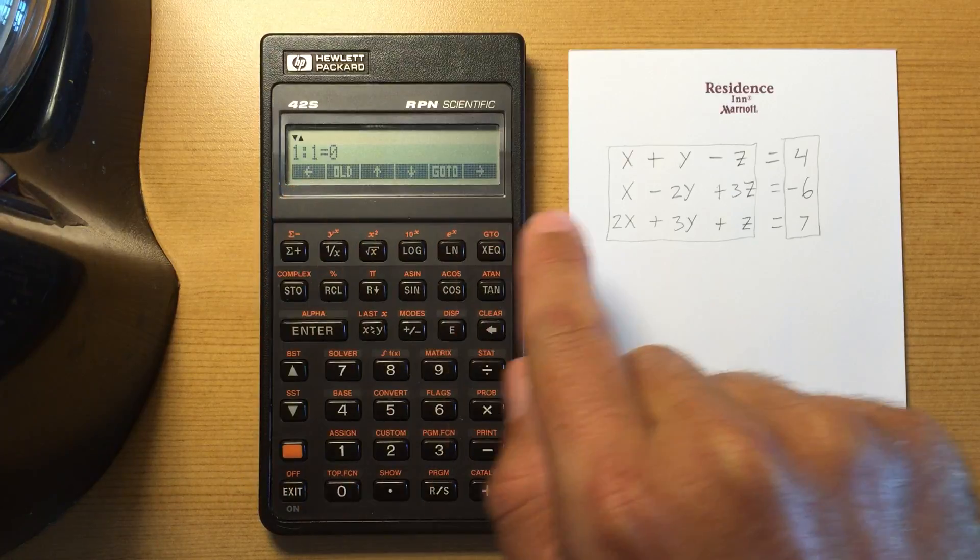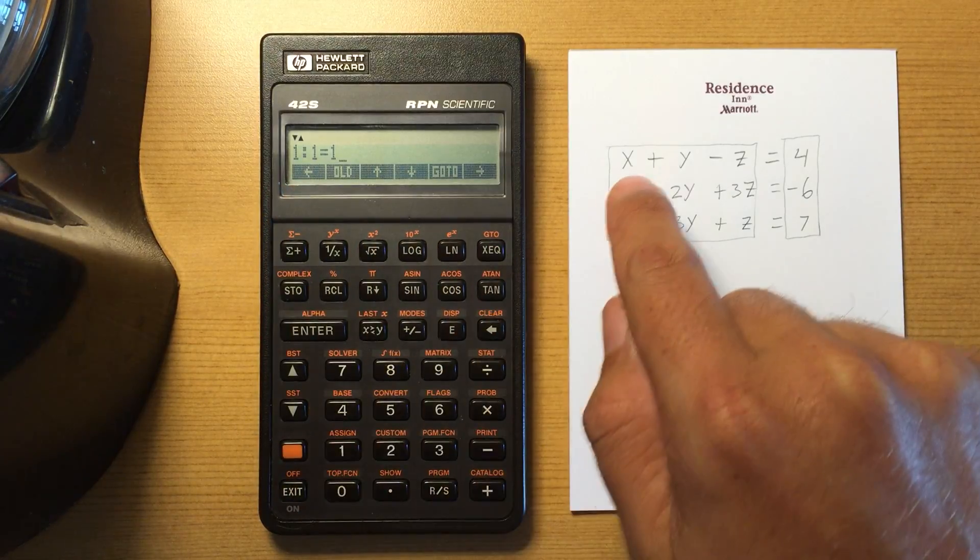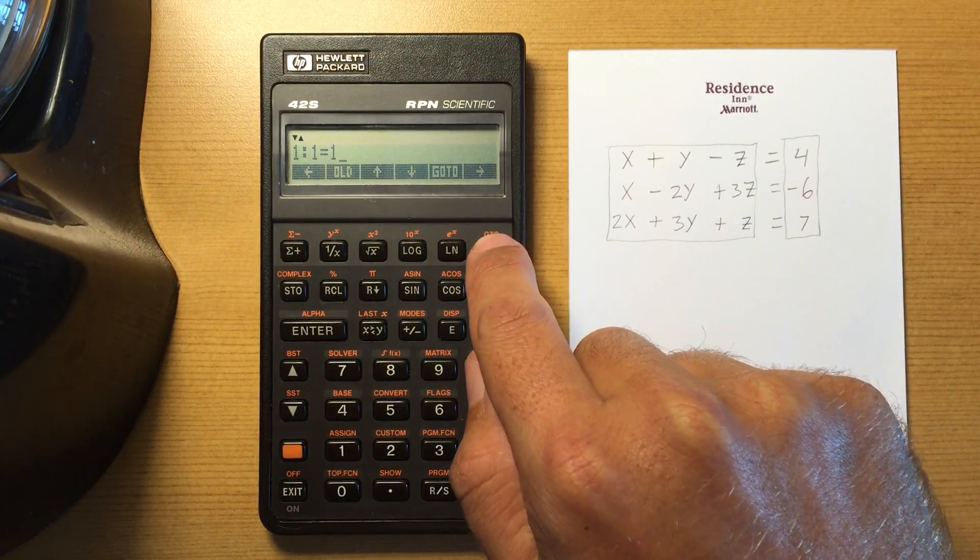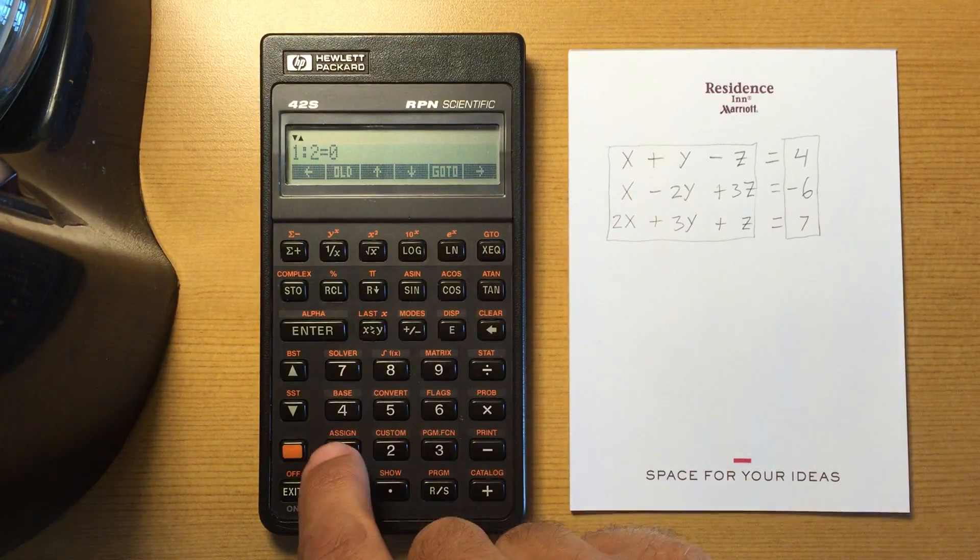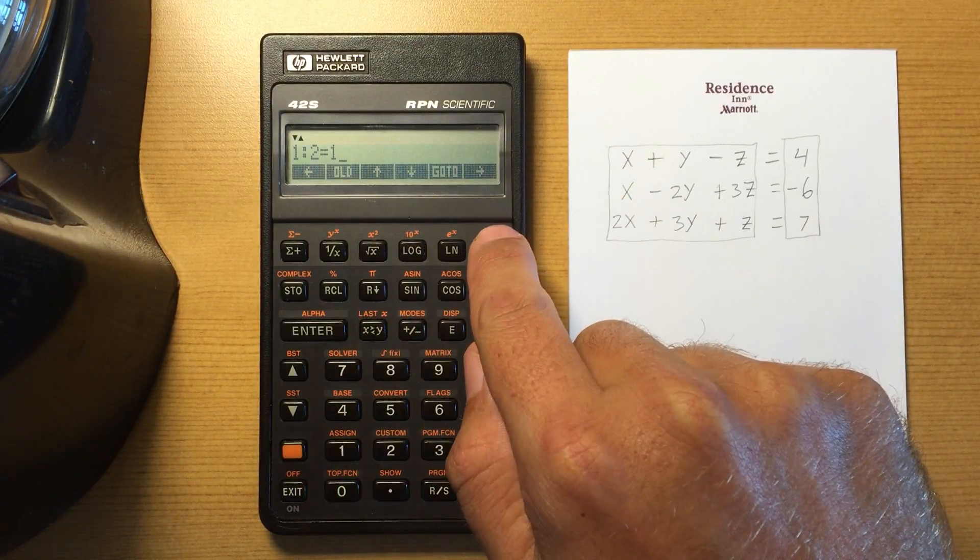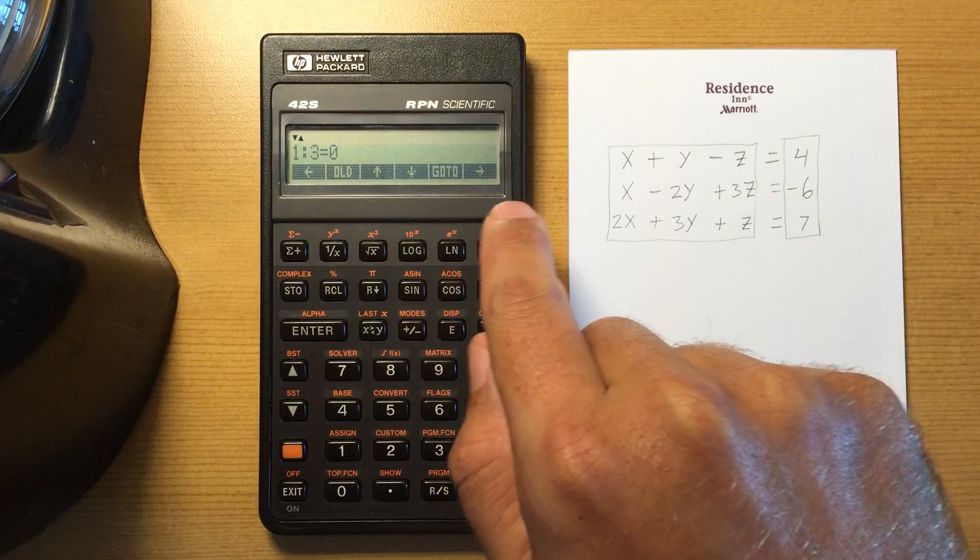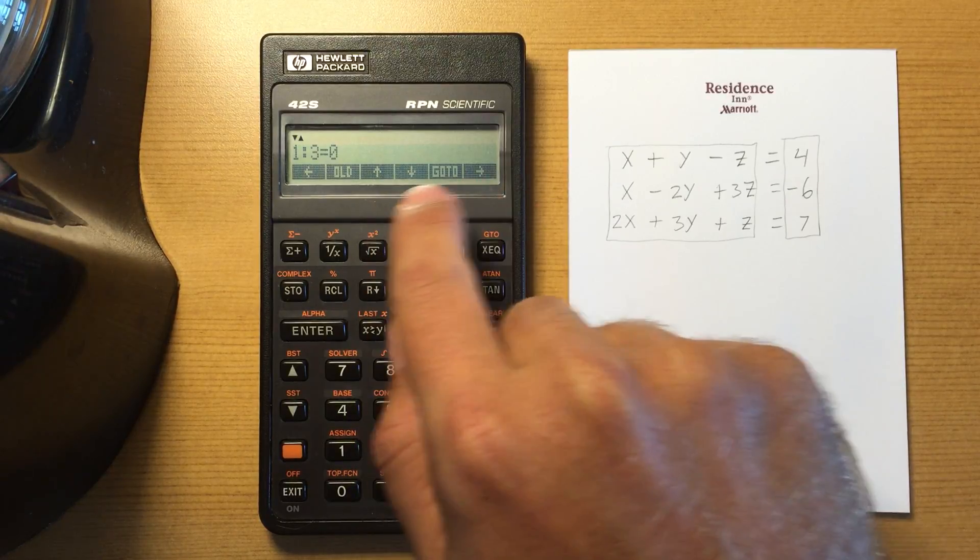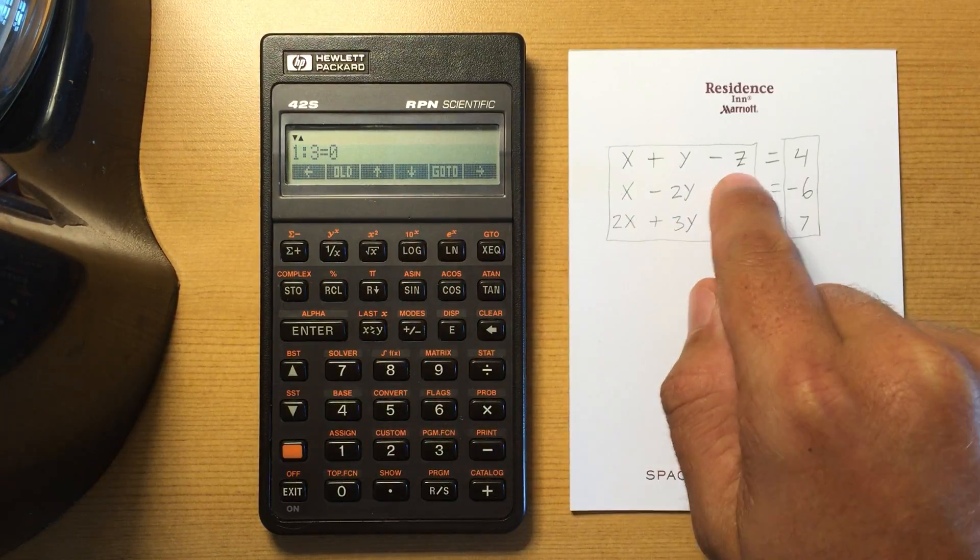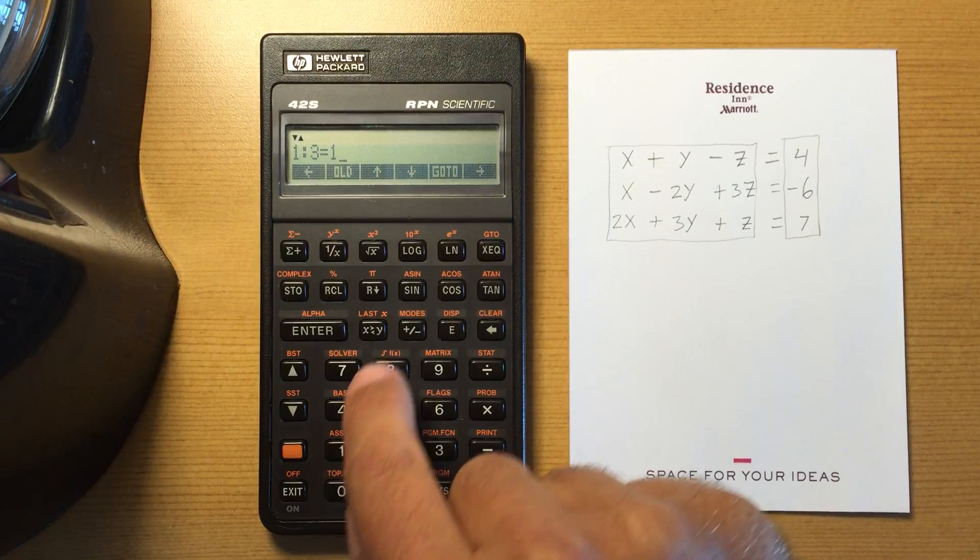So my first element 1,1 that is the coefficient of X so that's 1. The coefficient of Y is 1. I'm just going to the next element, it'll wrap around so I'm just going to the right, so that's going to be negative 1.